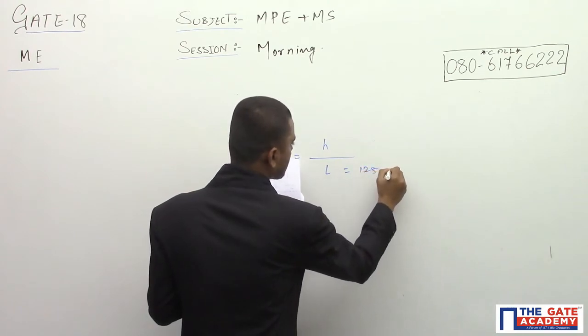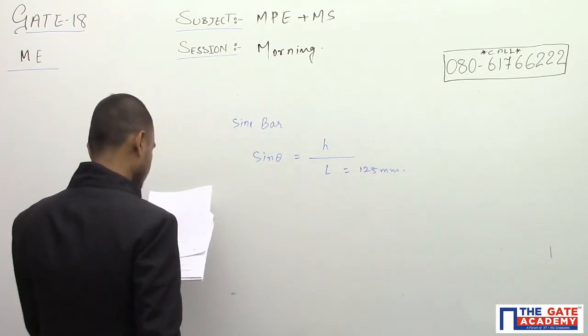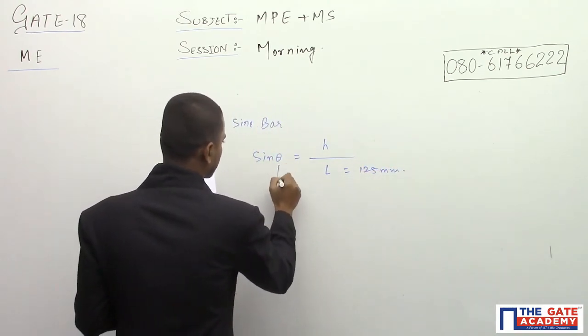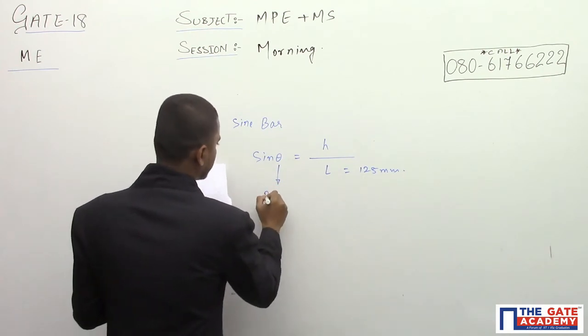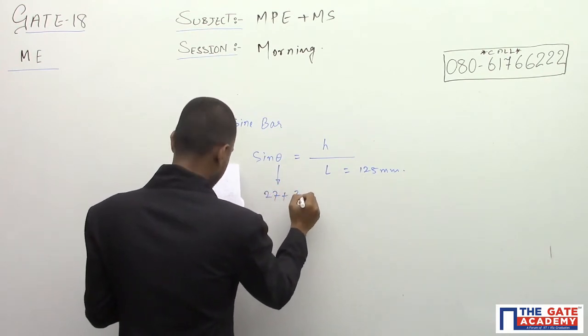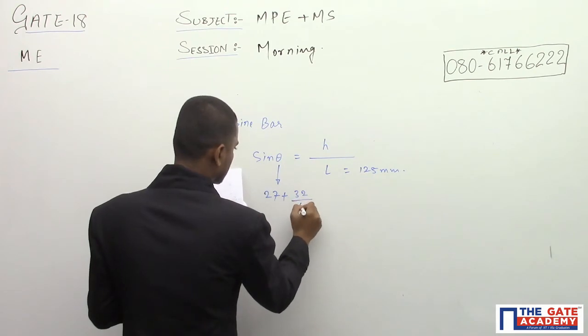This theta will be equal to 27 plus 32 upon 60, so it will be equal to 27.533 degree.